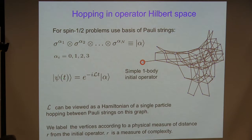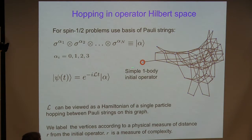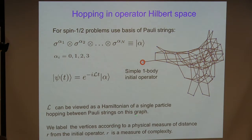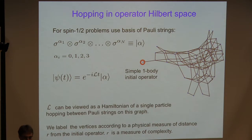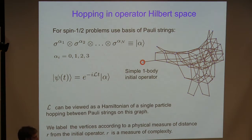When I apply the Liouvillian, I propagate this initial operator. I can think of my Liouvillian as a hopping matrix giving me matrix elements between different points on a graph, where each point represents one Pauli string. So there is a complicated graph. This is not anything new — this is just how the problem is. The problem is very complicated; there are many points in this graph and the connectivity is complicated. It's a single-particle Hamiltonian hopping on a crazy graph. The next step is to label vertices according to some physical measure of distance — roughly speaking, a good measure is the size of the operator, how many non-zero Paulis there are in the string.